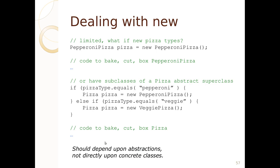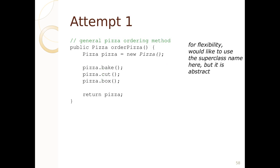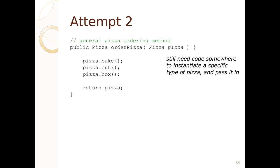Here is our first attempt at writing code to bake, cut, box, and set up a pizza and return it. We make a new pizza, assign it to pizza, bake, cut, box. There's a problem here — we're basically using the superclass, but the superclass is abstract. It's not the actual pizza we really want. How are we going to specify the pizza? We could use dependency injection, where the pizza is a parameter and it comes in.